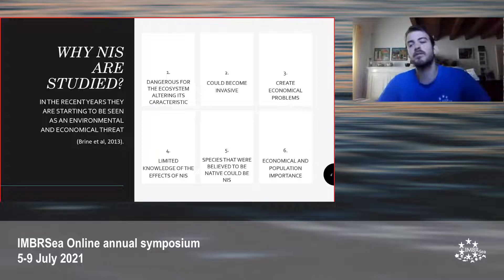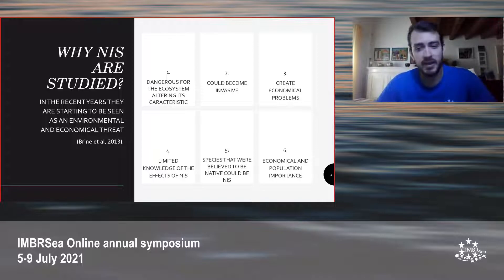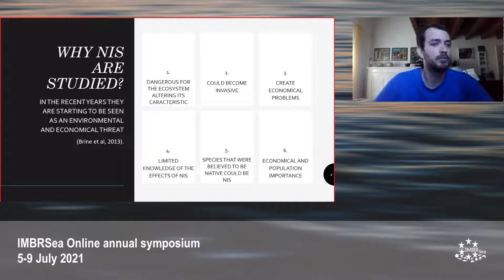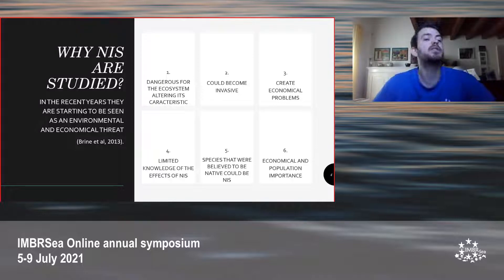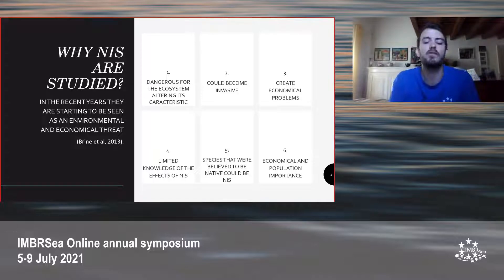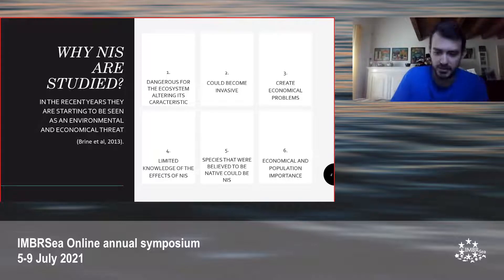And also, alongside these negative effects, positive effects that NIS can have can be of economical and population importance. For example, the European mussel was introduced in the southern hemisphere of the world and it became important for its economical and population importance.